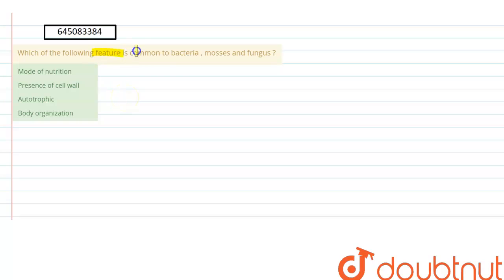of the following feature is common to bacteria, mosses, and fungus? The options are mode of nutrition, presence of cell wall, autotrophic nature, or body organization. We need to find out the feature which is possessed by all of these—bacteria, mosses, as well as fungi. Let's consider the options one by one.